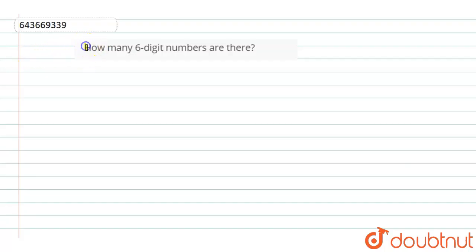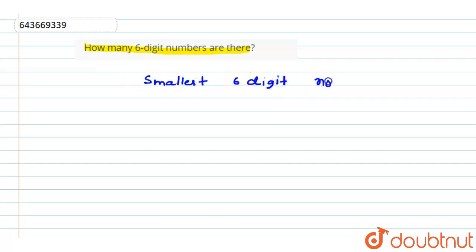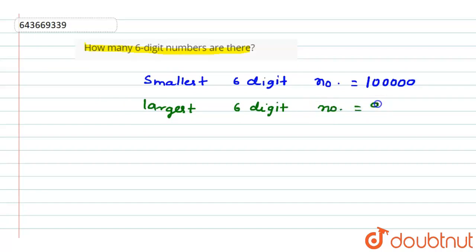The question given is: how many 6-digit numbers are there? To find the total 6-digit numbers, first we have to find the smallest 6-digit number, which is 100000, and the largest 6-digit number, which is 999999.